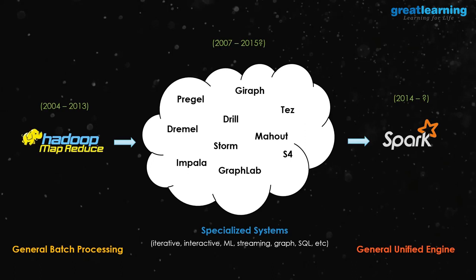If you go to a Hadoop system today and ask somebody what you should learn, they would be confused — you'd have to learn Pig, Hive, Mahout, and everything. Another problem is that if you start learning Storm for real-time processing, you first have to learn Storm's API, its language, install it on top of Hadoop, and learn the integration before it starts working. Learning all these different tools actually became a big problem.